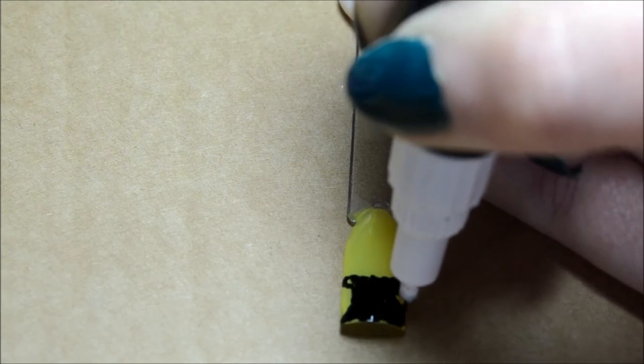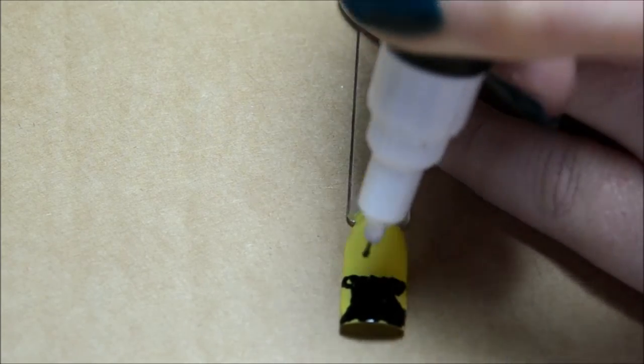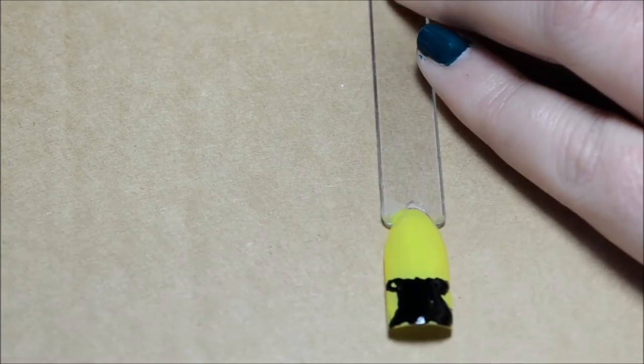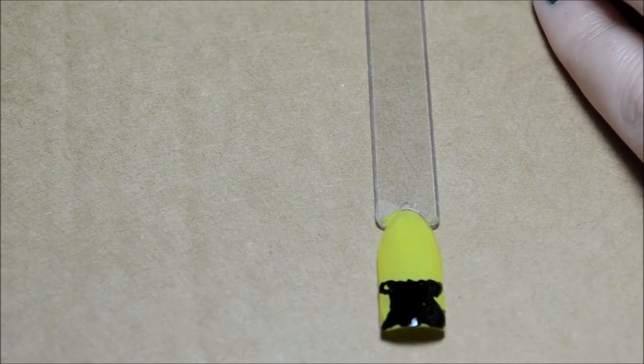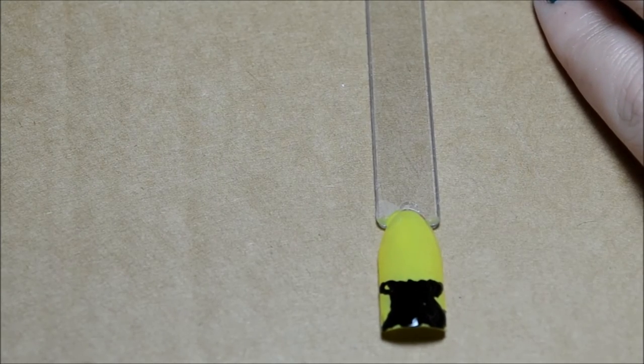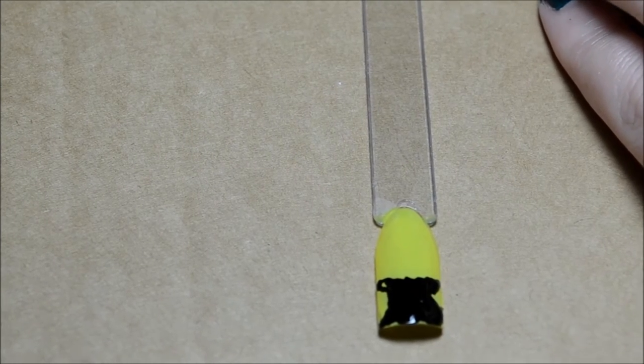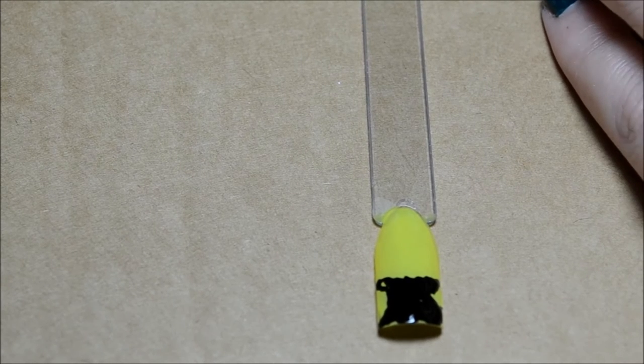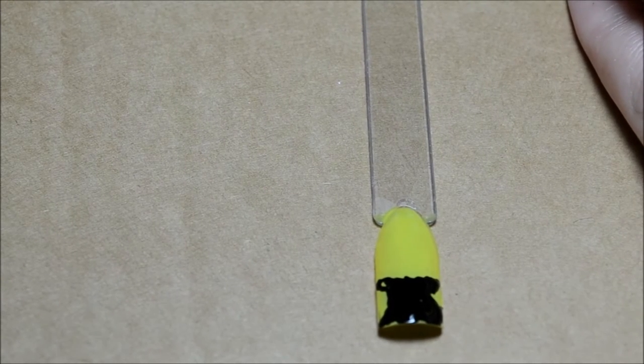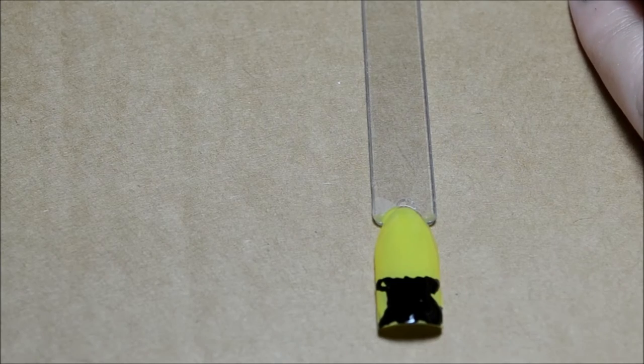And by doing the yellow background, you just need to literally draw on the outfits. Rather than trying to fill everything in with the yellow. Which could prove difficult. Because yellow can be quite thin as a nail varnish. And you need quite a few coats to build it up. So, we just need to let that dry.